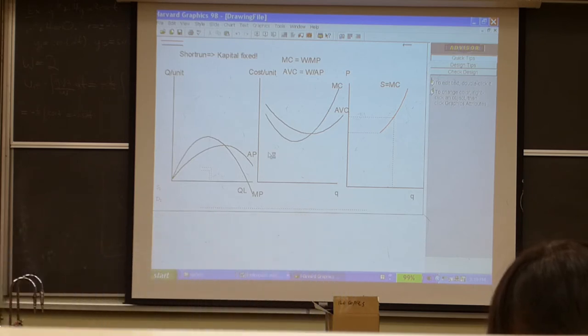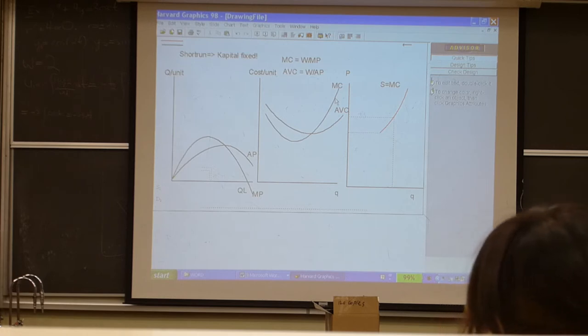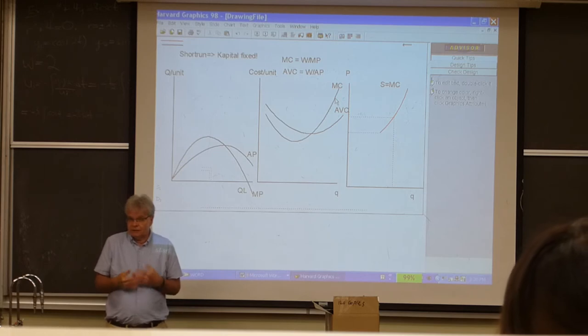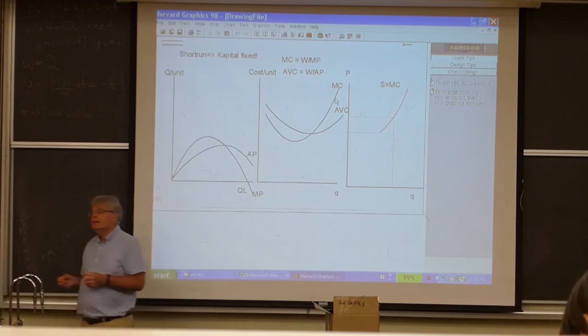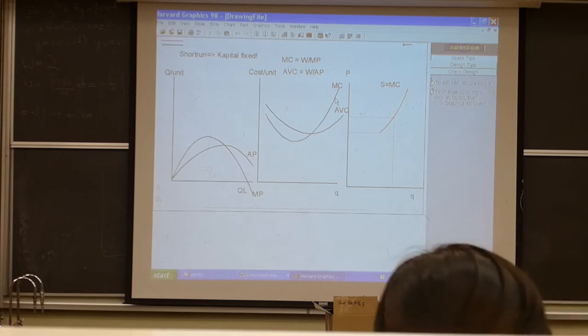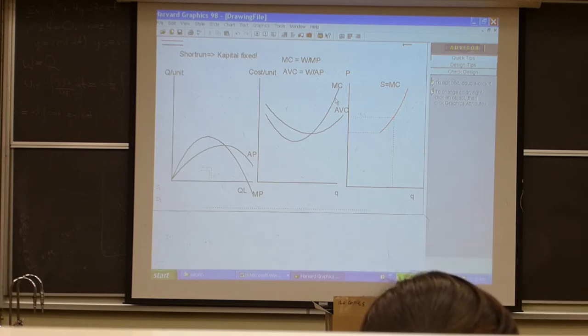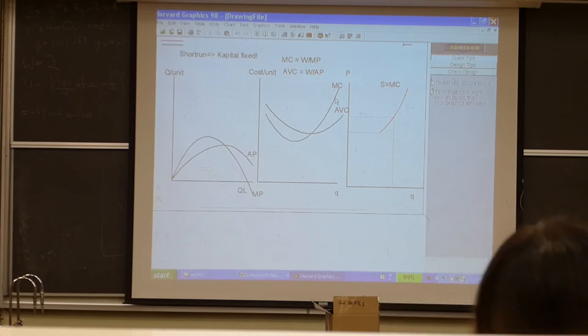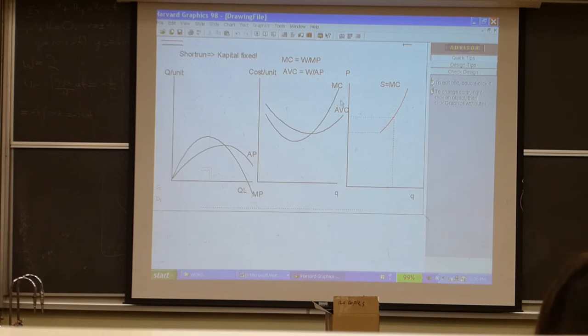We showed that for any given price, the firm would produce the output where price equals marginal cost. That means the marginal cost function is the supply function of the individual firm. And this turns out to be of great significance. When I ask you to draw this thing about fixed cost, before you draw anything, you go: wait a minute, the supply function is the marginal cost function. This you must remember, or you will screw up.